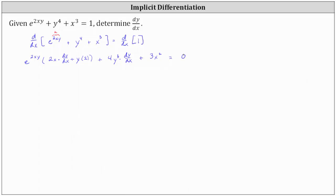Now we need to solve this equation for dy/dx. First, let's clear the parentheses by distributing e to the power of 2xy. This gives us 2x e to the power of 2xy times dy/dx, plus 2y e to the power of 2xy, plus 4y cubed times dy/dx, plus 3x squared equals zero.